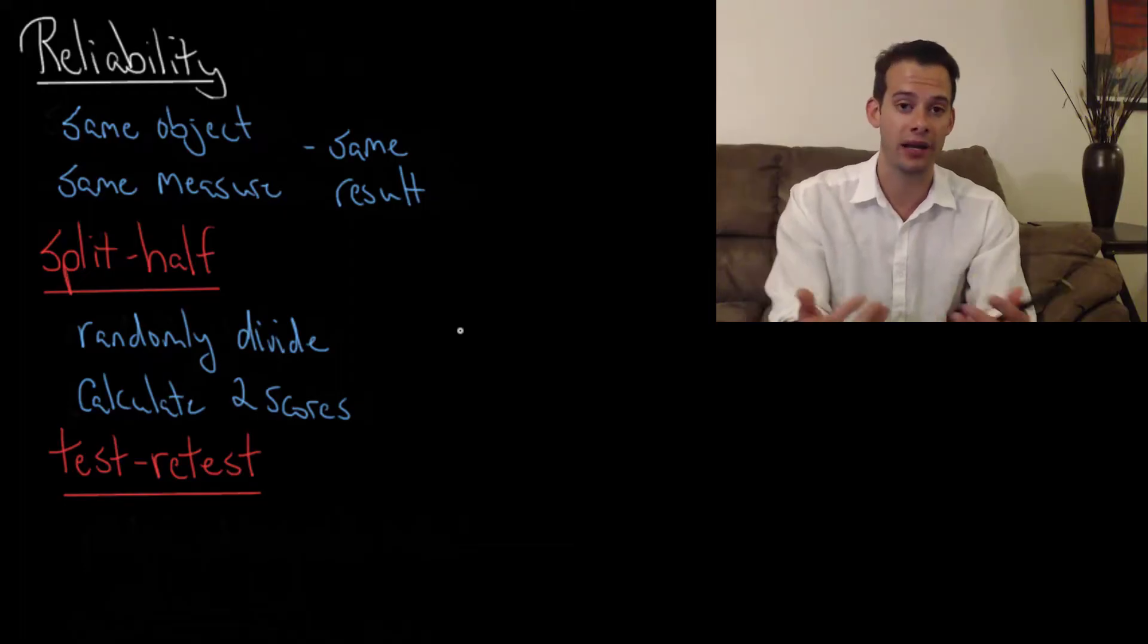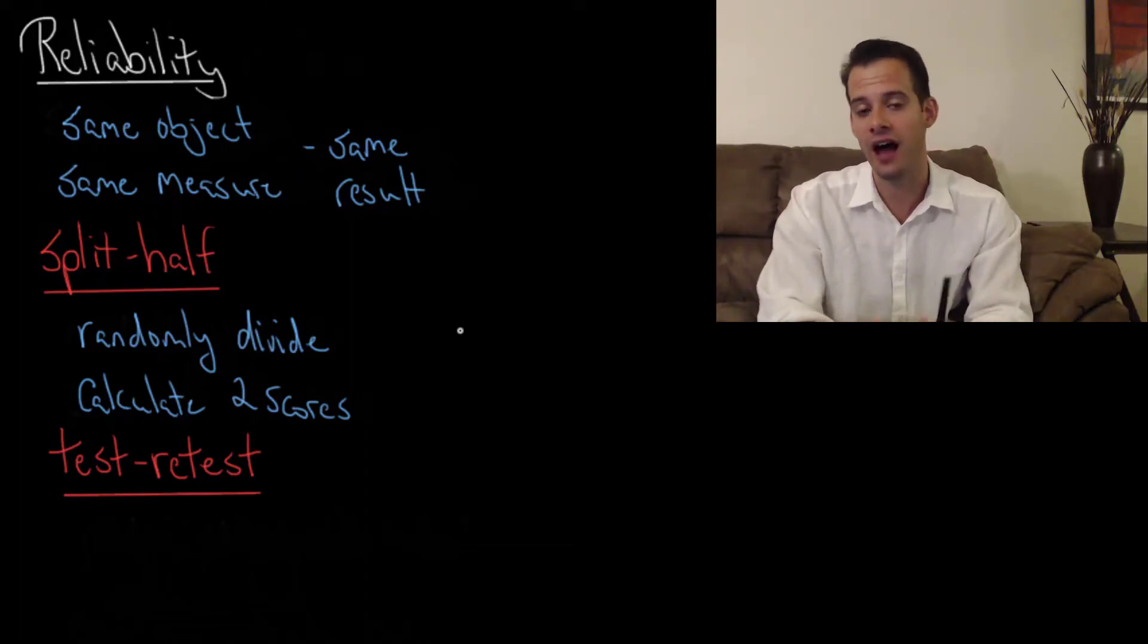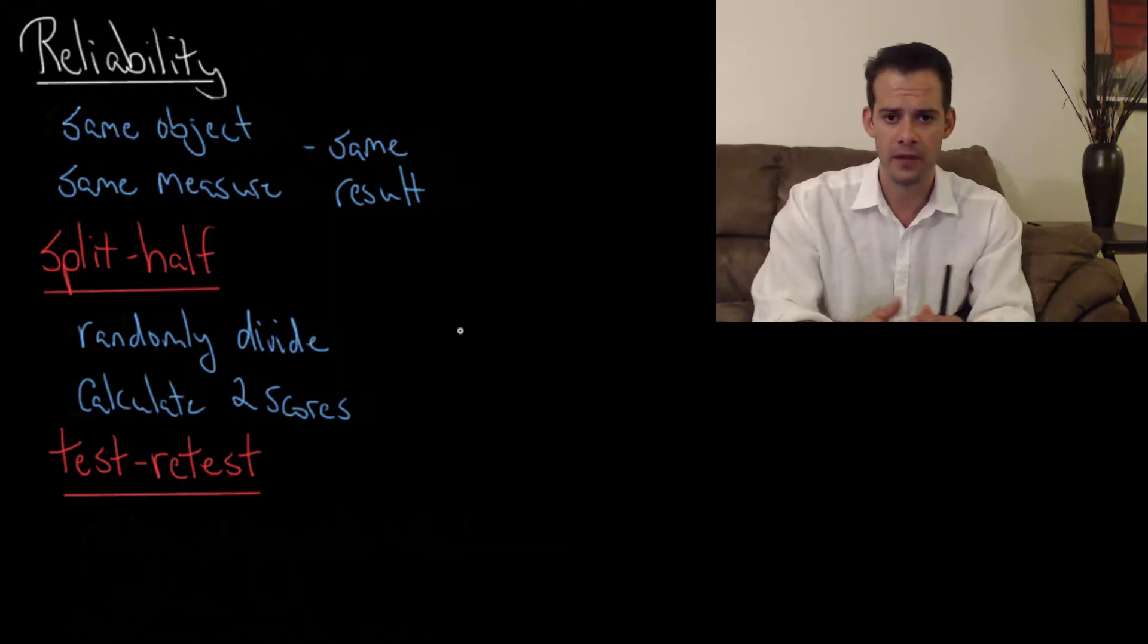And it works even better if you have a very large assessment. So if I had an IQ assessment with a thousand questions on it and I was splitting it up into two groups of 500, then it should be the case that you should get pretty much the same score on each half of the test. And if not, then we might question the reliability of the test. Okay, so that's one way to assess reliability.